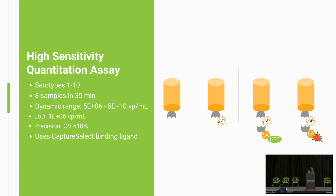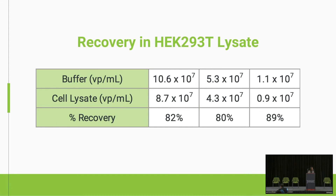In the high sensitivity kit, after the nanobody captures the capsid, we add a biotinylated secondary antibody that binds to the capsid, then a streptavidin conjugated with HRP to amplify the signal. The signal amplification occurs because the HRP substrate has a very high refractive index and deposits on the biosensor surface, giving you a very high signal. The beauty of this approach is that you can still use crude lysate because you're fishing the capsid out of your crude solution. Here is a recovery study — I believe this is AAV5 spiked into HEK293 crude lysate at different concentrations.